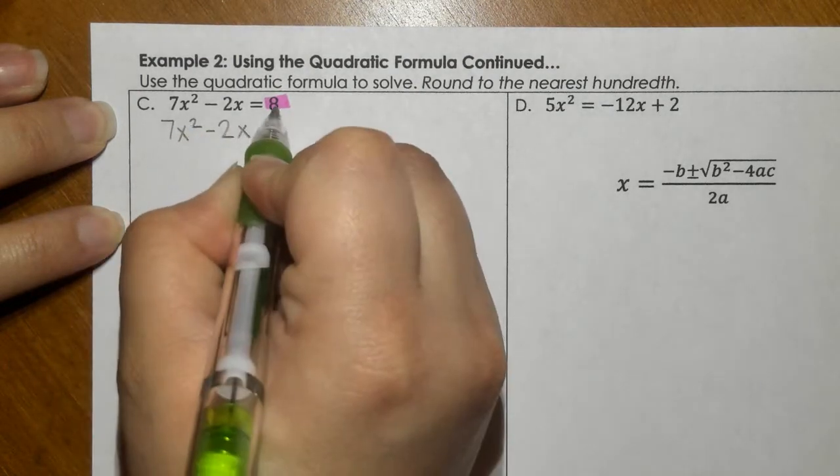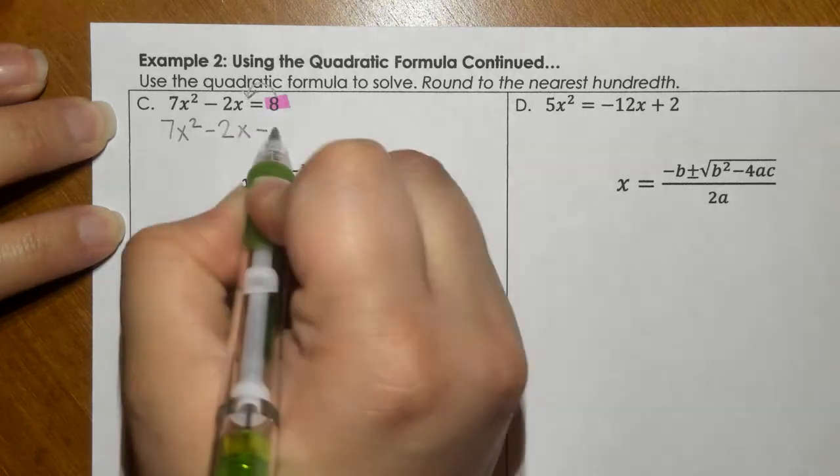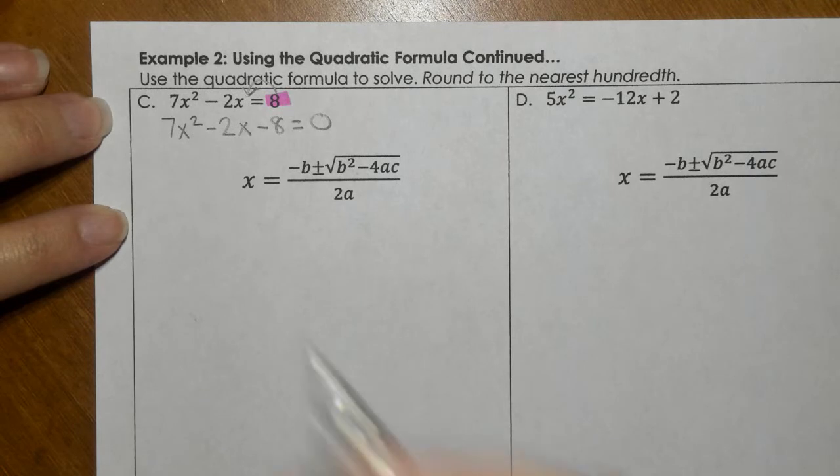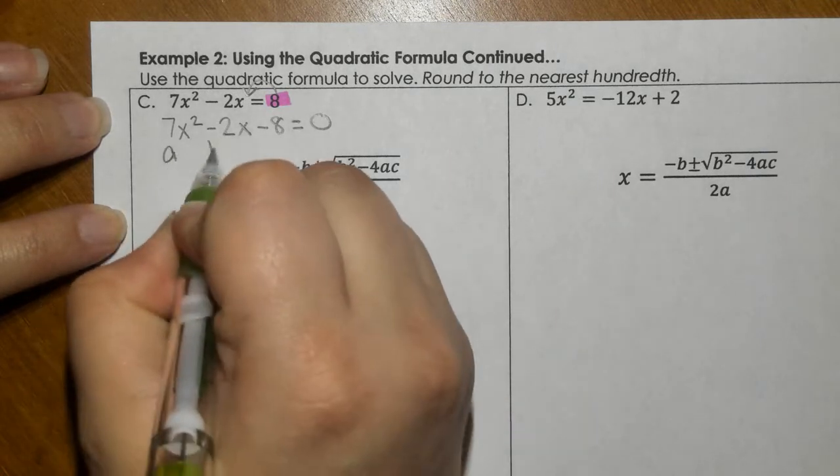We would bring this over here and change the sign, and that equals zero. So standard form, we have A, B, and C.